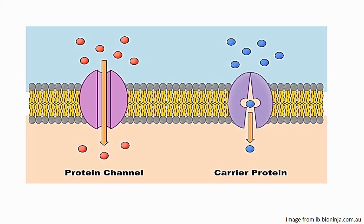Think of channel proteins as a tunnel or a pipe that allows molecules to get through without walking through the swamp — that's how I picture it. A channel protein is just a channel: a space that allows molecules to go from a region of higher concentration to a region of lower concentration without changing its shape — it has a fixed shape, like a drainage or gully system. Carrier proteins, on the other hand, bind to molecules and release them at the other end, changing their shape in the process.